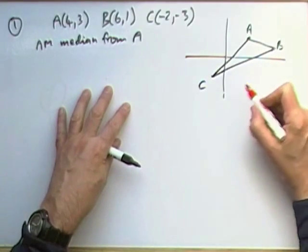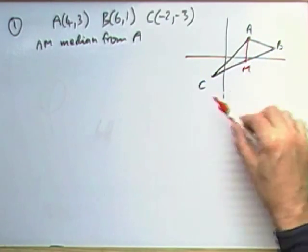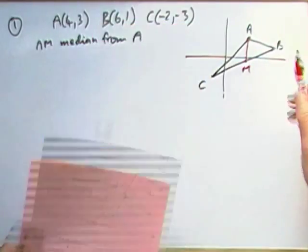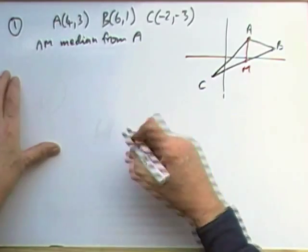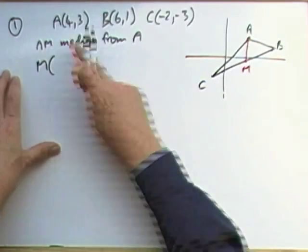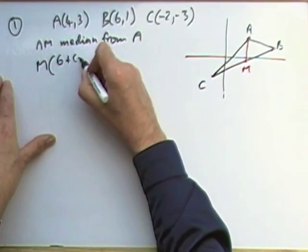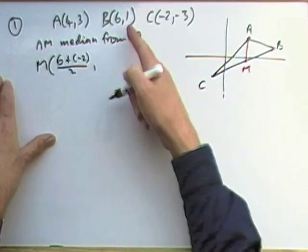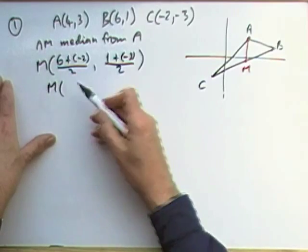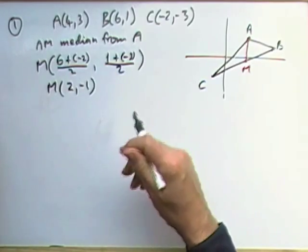It says AM is the median from A. M will be the first thing. I want the equation of AM, so I need to get the point M. Well, M is just going to be the midpoint of BC. It's handy having them written there so you can pair them off. So it's the average. I'll be adding the X coordinates and the Y coordinates. 6 take away 2 is 4, divide by 2 is 2. 1 and negative 3 is negative 2, divide by 2 is negative 1. So M is the point (2,-1).